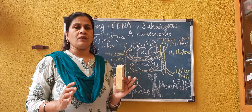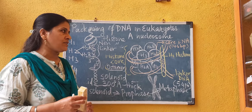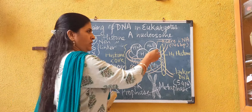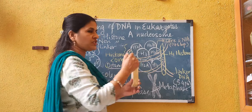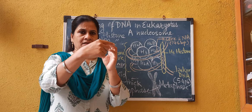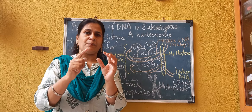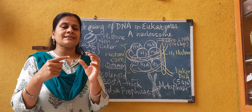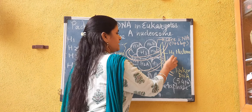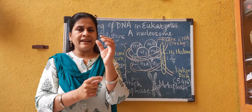The histone core is rich in arginine and lysine amino acids, making it positively charged. A negatively charged DNA molecule enters the histone core, wrapping it twice. The first wrapping is a complete turn while the second turn is three-fourths — it is not completed fully. So we can say it is one and three-fourths turns. That turn is completed around the histone core and then the DNA leaves the histone core.